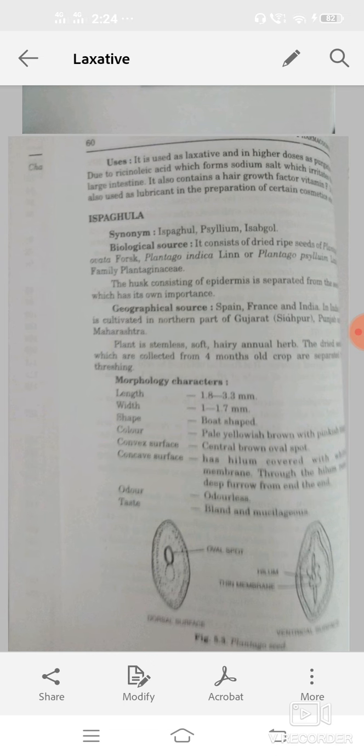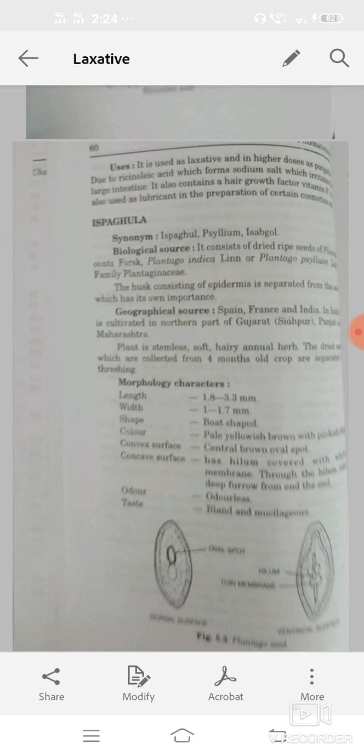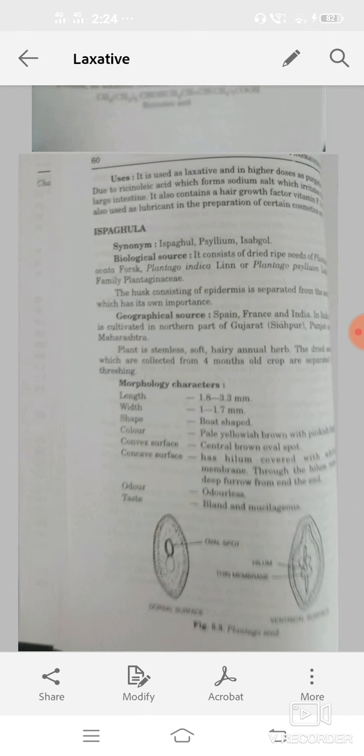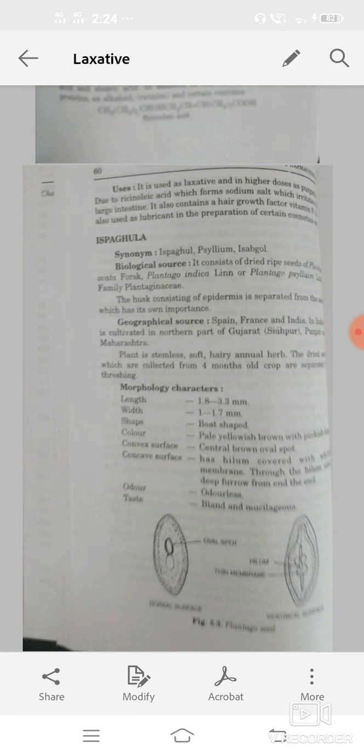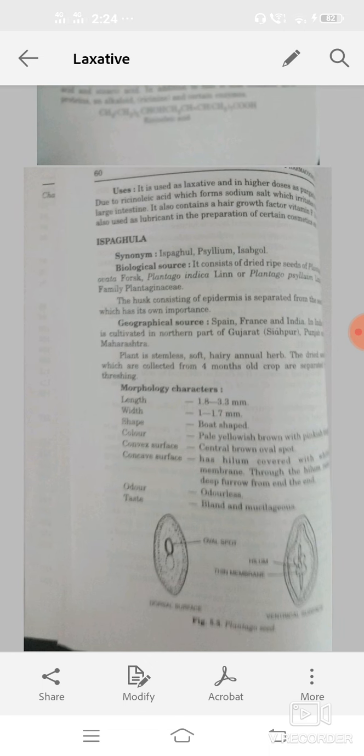In India it is cultivated in north part of Gujarat, Punjab, and Maharashtra. That is stemless, soft, hairy herbs. Dry seeds which are collected from 4 month old crops are separated by threshing.